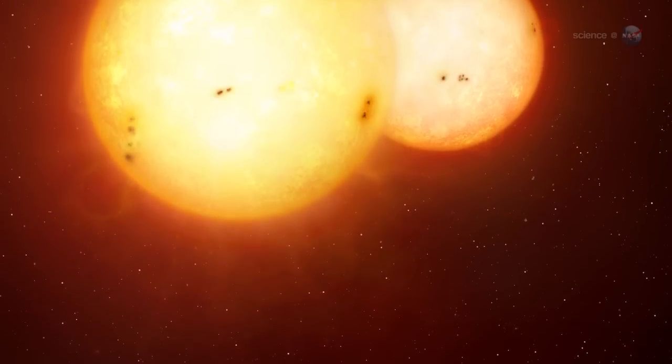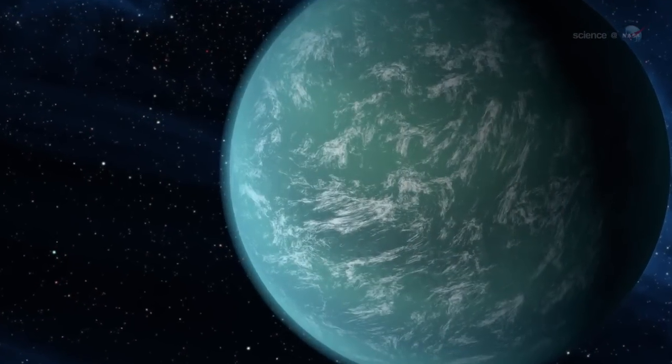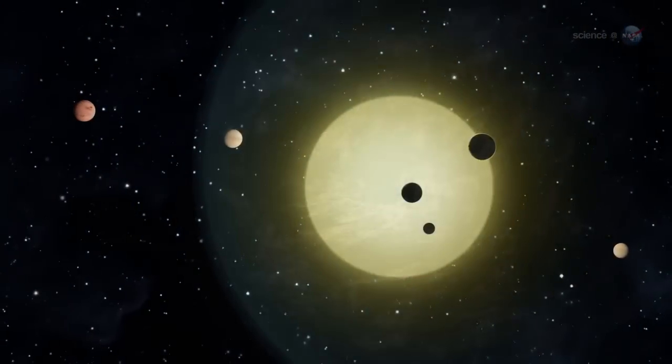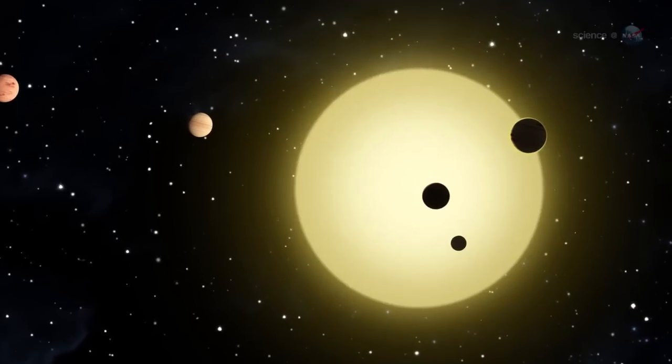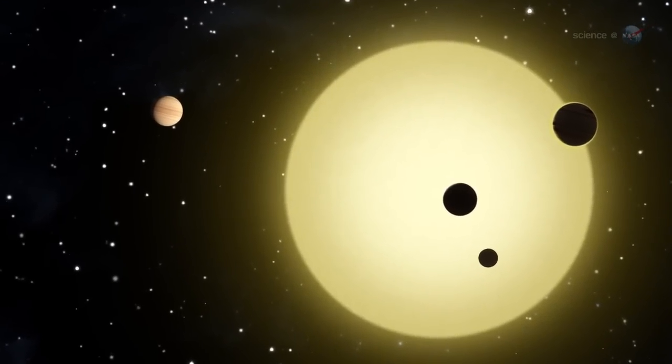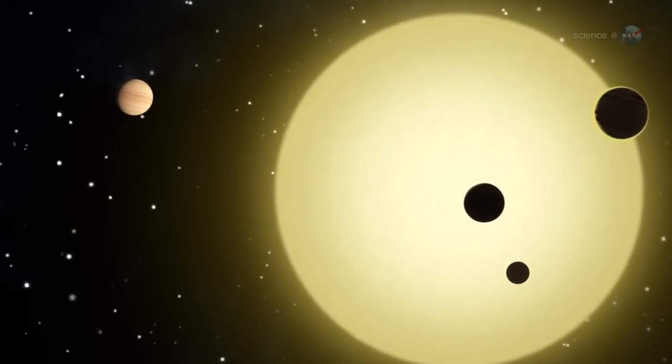Recent finds include planets with double suns, massive super-Earths and hot Jupiters, and a miniature solar system. The variety of planets circling distant suns is as wonderful as it is surprising.